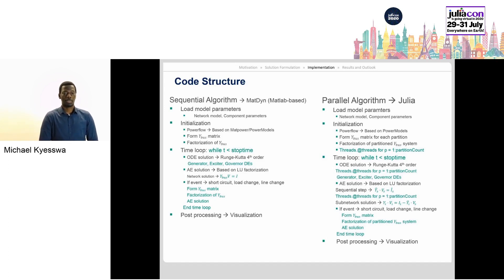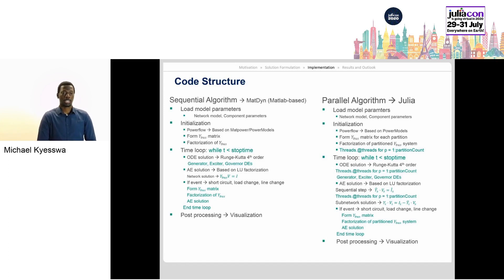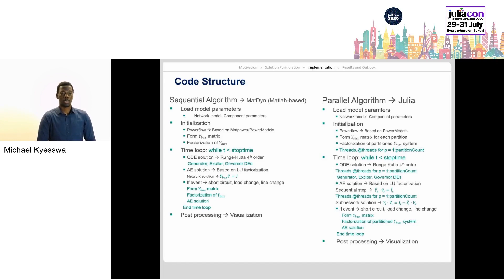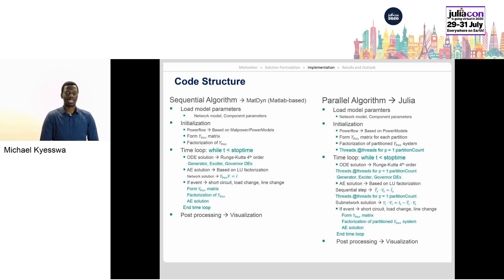Depending on the network definition, admittance matrices are formed for each partition and this can be completed in parallel using the @threads Julia macro. Each time step in the time loop consists of two main tasks. One, the solution of the differential equations for the generator subsystem. And since these subsystems are decoupled from each other, this can be completed in parallel using the @threads macro.